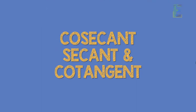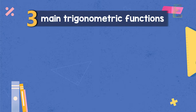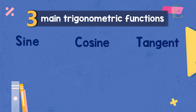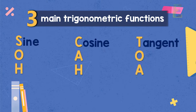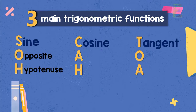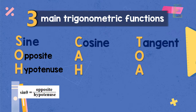Before we discuss cosecant, secant, and cotangent, let's have a quick recap about the three main trigonometric functions, which are the sine, cosine, and tangent. In order to remember the formula of sine, cosine, and tangent, we use the expression SOH. For the expression SOH, S stands for sine, O stands for the opposite, and H stands for the hypotenuse. Therefore, sine is equal to opposite over hypotenuse.